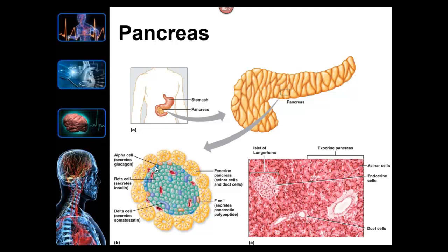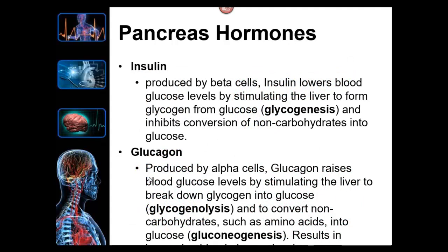Blown up further you can see beta cells, alpha cells, and delta cells. Beta cells are probably the most important — they produce insulin. Insulin causes any cell with an insulin receptor to take glucose out of the plasma and store it as glycogen, which is called glycogenesis. This lowers plasma glucose levels. After eating carbohydrates, plasma glucose rises, which is the stimulus for insulin secretion — negative feedback lowers blood glucose back down and shuts off insulin.